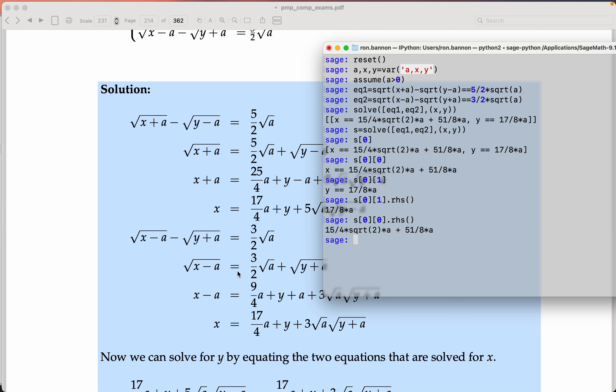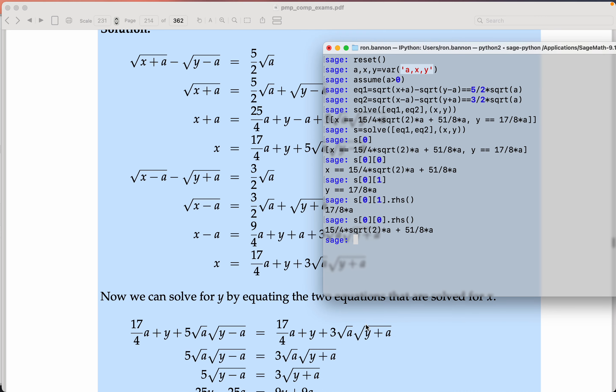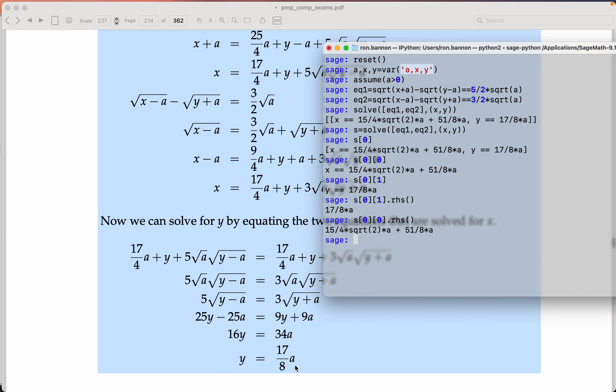And let's see what they got over here. You know what, it's interesting. The answer they wrote here is 17 quarters A plus Y, and then they got this 3 root A, Y plus A. And let's see what they got. They make a substitution over here. They got Y is 17 eighths of an A. You get the idea?